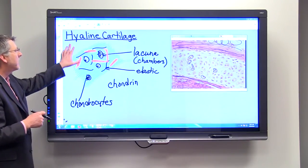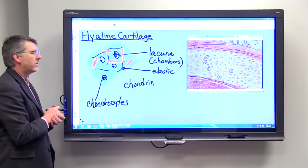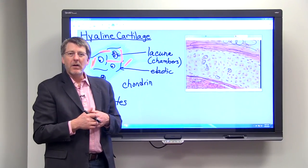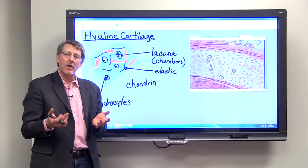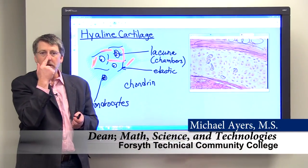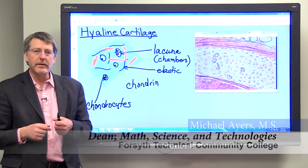So hyaline cartilage is very tough, but yet it has that flexibility and allows it to do a good job in places like the trachea. You also find it in the articular cartilage at the end of long bones, and as we mentioned, it can be found at the end of your nose.